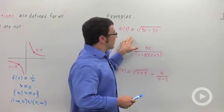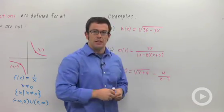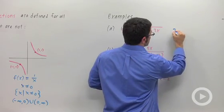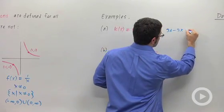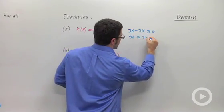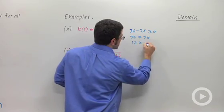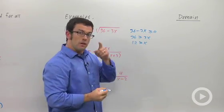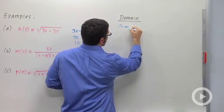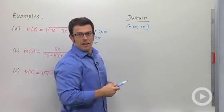For example, this function, the radical function, is only going to be defined when the inside function is greater than or equal to 0. So we will need 36 minus 3x to be greater than or equal to 0, which means 36 has to be greater than or equal to 3x. Divide both sides by 3, you get x is less than or equal to 12. So the domain will be all the numbers from 12 to the left on the number line.